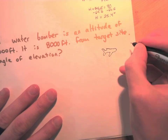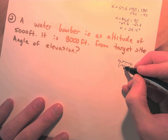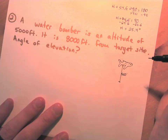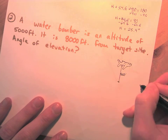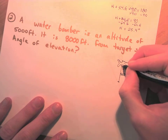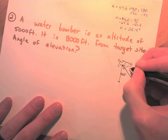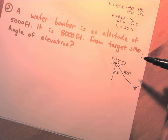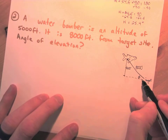So you have a water bomber — an airplane. It's five thousand feet of altitude, meaning height, and it's eight thousand feet from its target site. I'm going to assume that's directly eight thousand feet to the target. So the angle of elevation is the angle at this point from the horizontal up to the airplane.